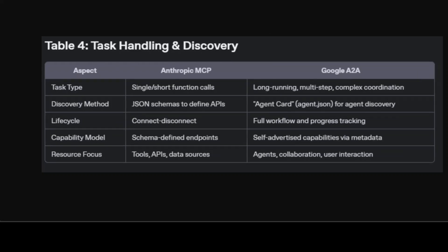For task management and discovery, MCP is built around single, quick interactions — ask a question, get an answer, move on. It uses JSON schemas to meticulously define which APIs or resources are available. With A2A, tasks can be complex, requiring multiple agents and steps over time. Discovery in A2A is handled through an agent card — a metadata file that publicly lists what each agent can do — while tracking each workflow's progress in detail.